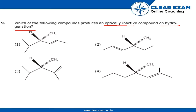Hydrogenation is a chemical reaction between molecular hydrogen and another compound or element, usually in the presence of a catalyst such as nickel, palladium, or platinum. The process is commonly employed to reduce a saturated organic compound. In this question, we need to find out which of the following compounds will create an optically inactive compound on hydrogenation.